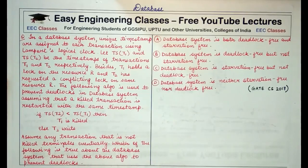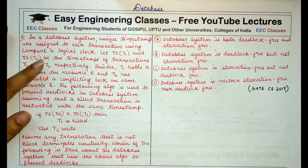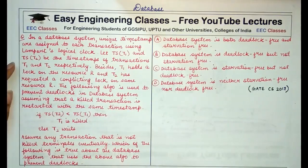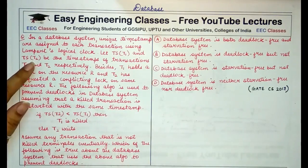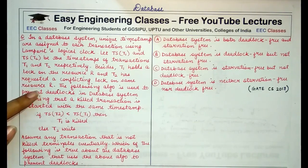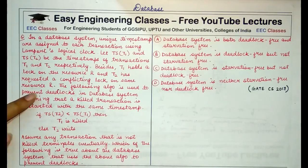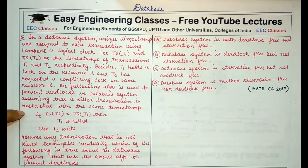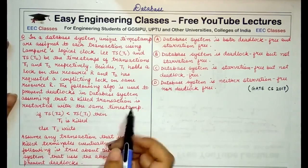The question says that in a database system, unique timestamps are assigned to each transaction using Lamport's logical clock. Let TS of T1 and TS of T2 be the timestamps of transactions T1 and T2 respectively. T1 holds a lock on the resource R and T2 requests a conflicting lock on the same resource R. The following algorithm is used to prevent deadlocks, assuming that a killed transaction is restarted with the same timestamp.